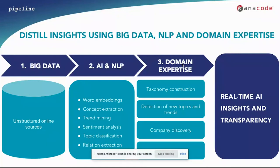We focus on the detection of new topics and trends from the data, the discovery of new companies, and the analysis of specific industry verticals and the penetration that AI has in different traditional industries. The output is a user interface with real-time insight and transparency on the AI landscape. There are two key points I'd like to explain in more detail, which are relevant both to users of the tool and as the backbone of our technology: the databases, and the algorithm we use for constructing, updating, and expanding our AI taxonomy.